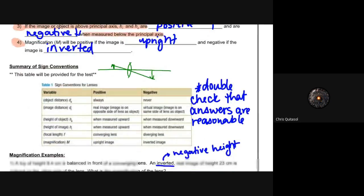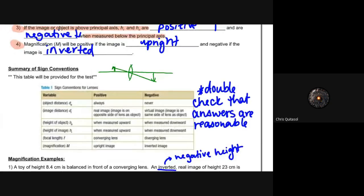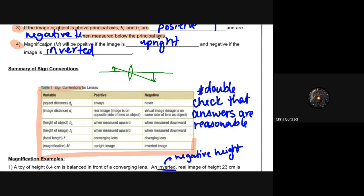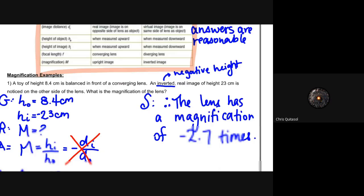We have a summary chart of the positive and negative values for lenses and magnifications. I would prefer that you first write out all the different rules for magnification and for the thin lens equation, and then you can start using this chart to help solve problems. Also note: double-check that your answers are reasonable. You'll know if an answer is reasonable based on your understanding of how lens refraction works, so make sure you have a good grasp of that.